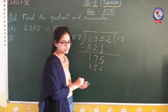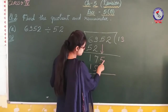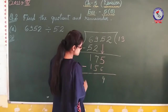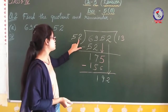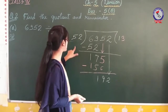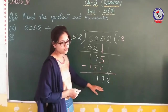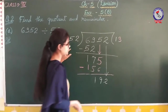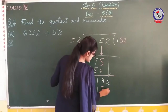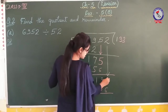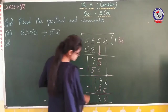Now we subtract: 175 minus 156. 5 minus 6 requires borrowing, so 15 minus 6 is 9. Then 6 minus 5 is 1, and 1 minus 1 is 0. We bring down the next digit and continue the division step.